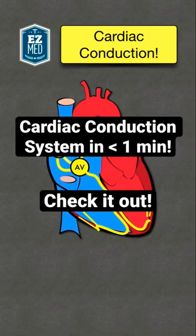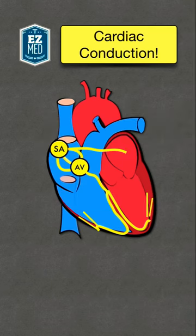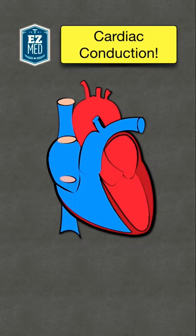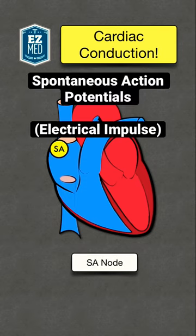Here is a quick review of the cardiac conduction system in less than a minute. In a normal functioning heart, the SA node is the primary pacemaker of the heart. The SA node generates a spontaneous action potential or electrical impulse.